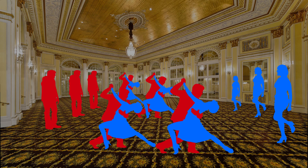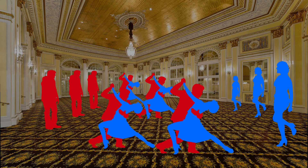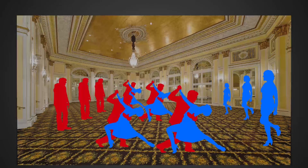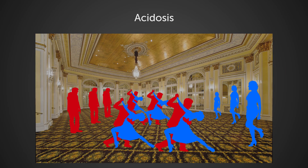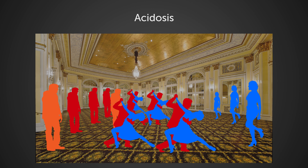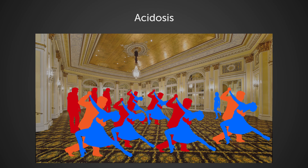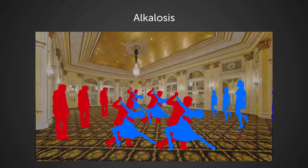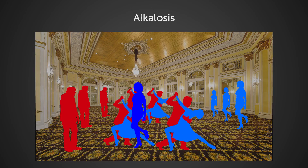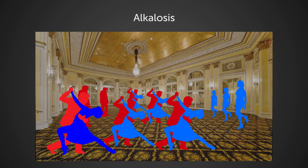There are two main dances that our blood buffer dancers will perform when blood pH is shifted outside the homeostatic range between 7.38 and 7.42. They will perform the acidosis dance once our blood pH has dropped too low — increased amounts of partnerless H+ dancers enter, and bicarbonate dancers will partner up with them. For the alkalosis dance, OH- dancers are partnered up with the carbonic acid dancers to lower pH.